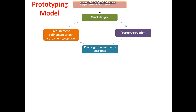Whatever refined requirements result are again included in a quick design. This is a complete cycle as far as the prototyping model is concerned. Once the customer is satisfied with what is shown — that it matches their requirement — that is then considered the final requirement of that particular software. The prototyping model takes more effort on requirement gathering and refinement, so that the gap between what the customer expects and what the development team understands gets reduced.